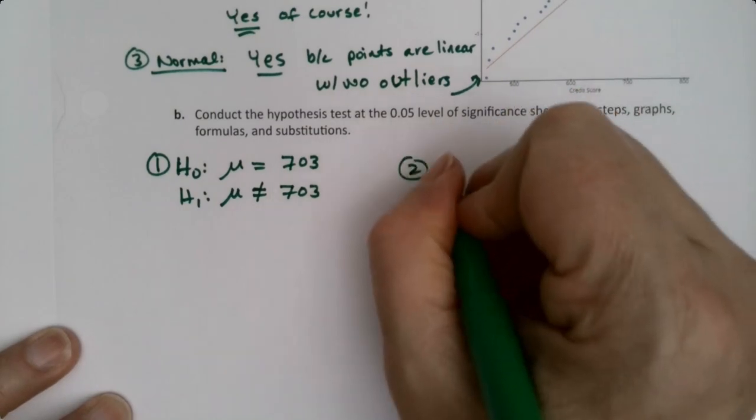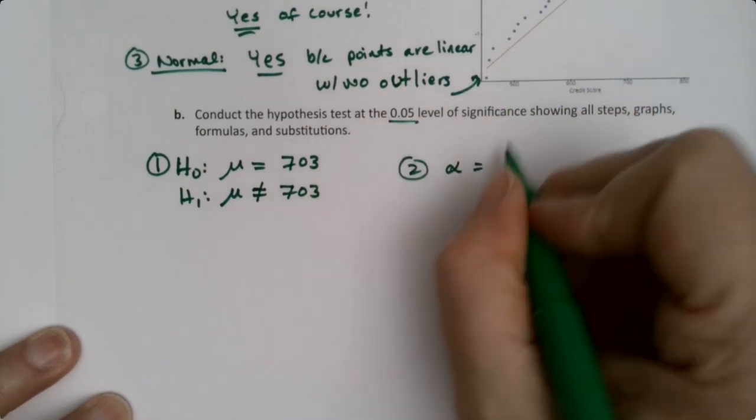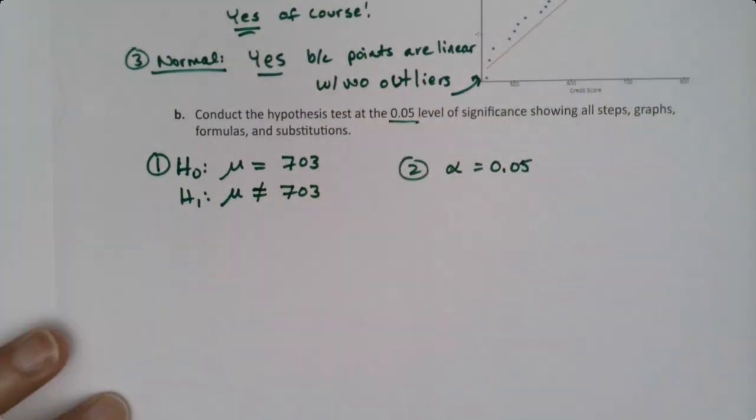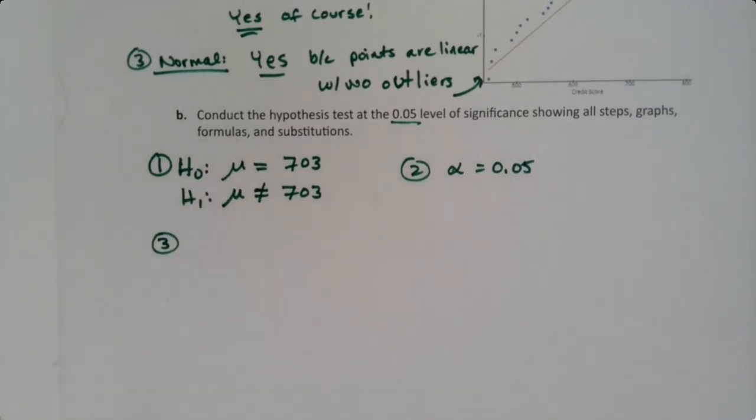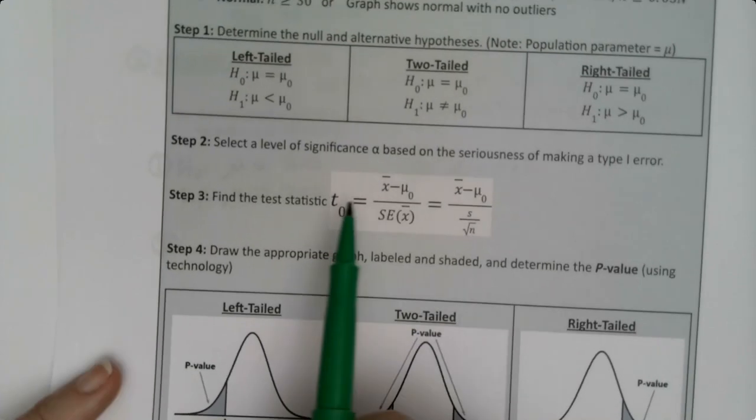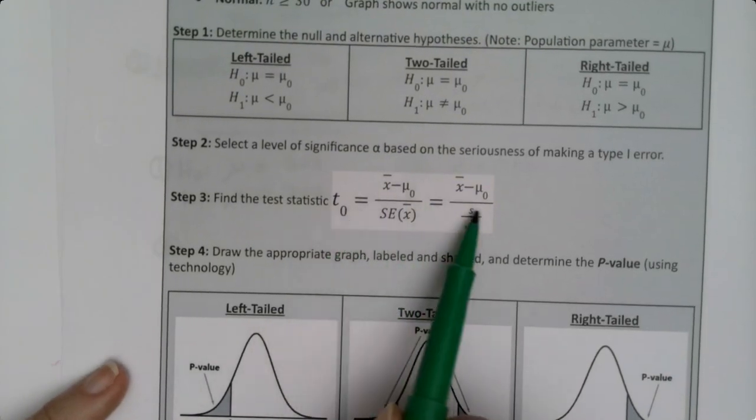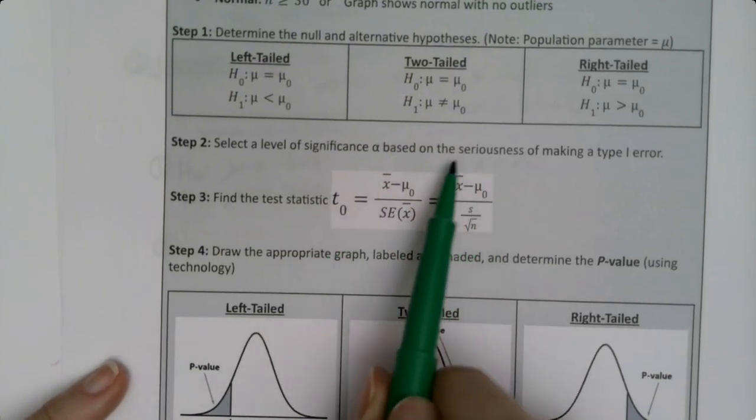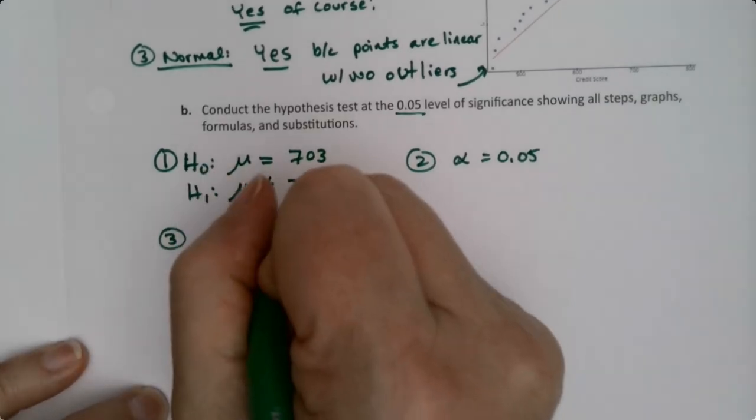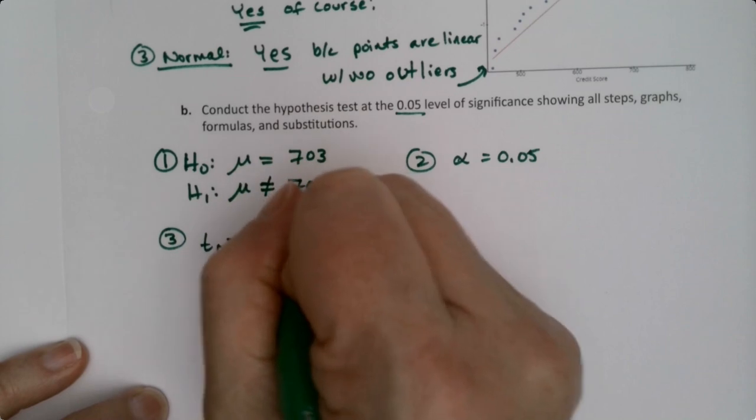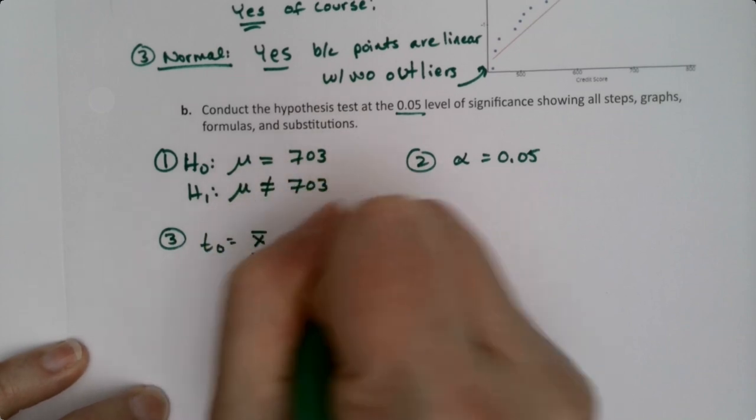Step two. Everybody's favorite stuff. Alpha. Alpha is 0.05. It's our level of significance. Done. Step three. We go from the easiest step to the worst step. So we want to find t0. Technically you could write either one of these formulas but we're going to write the one on the right. That's the one we use most often. So it's x bar minus mu 0 over s divided by the square root of n.